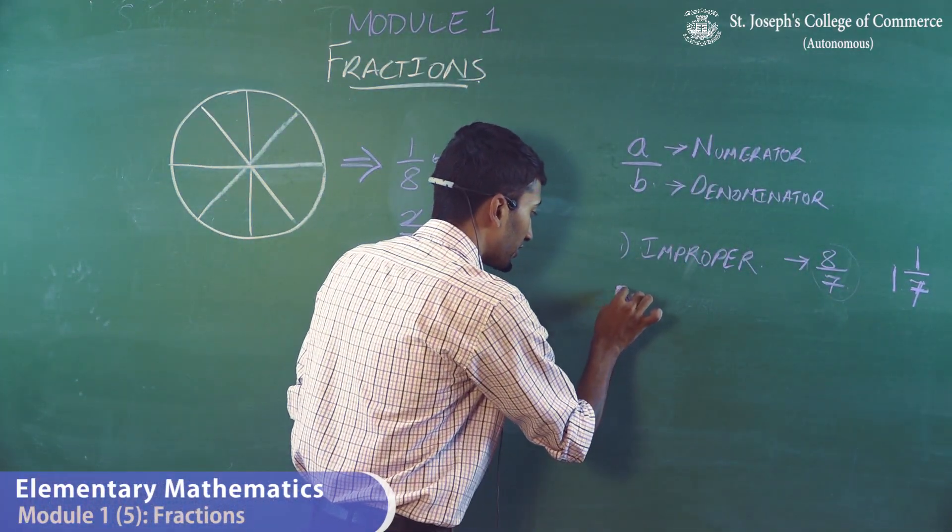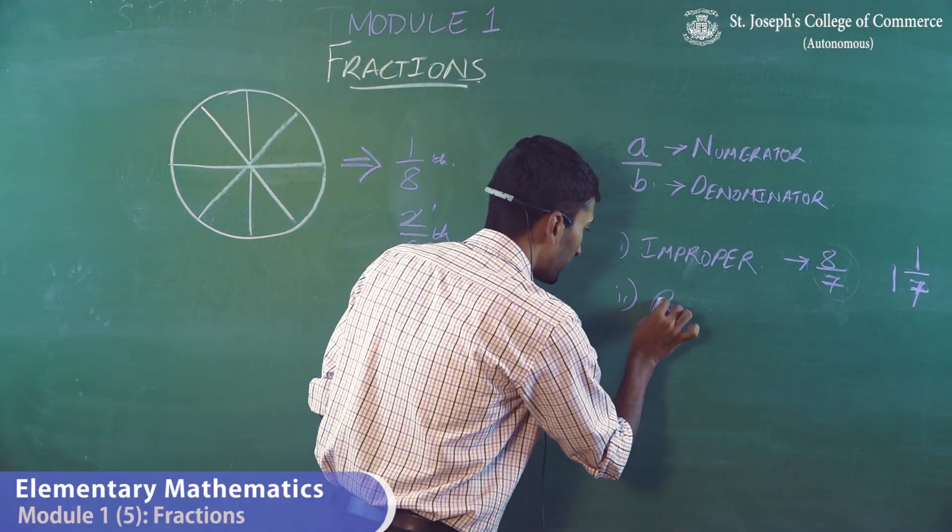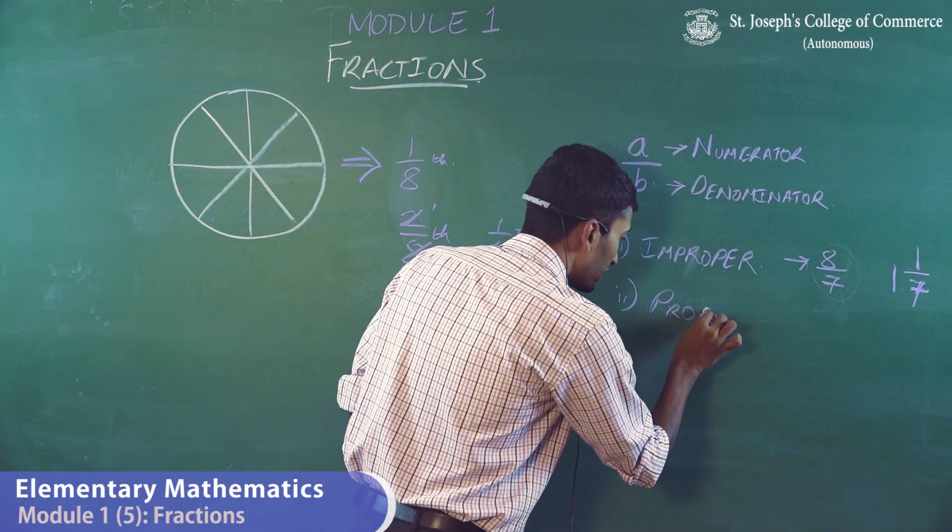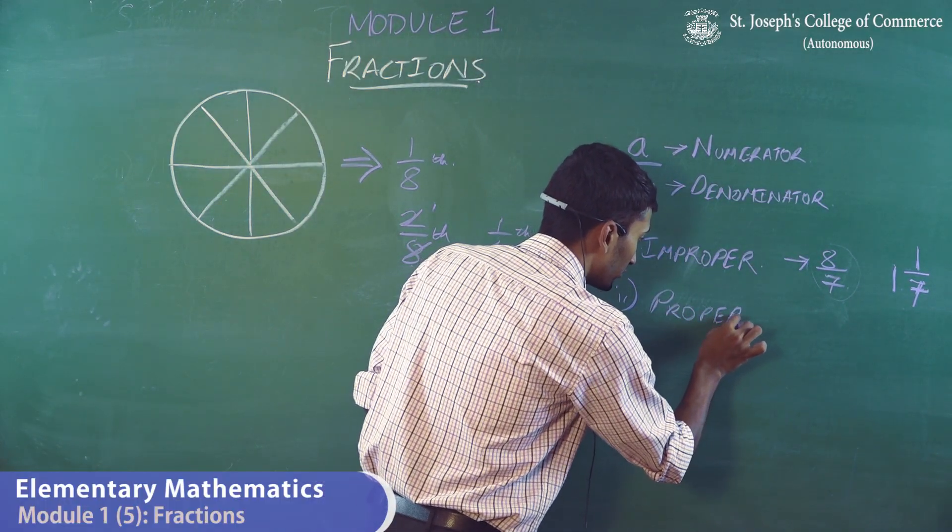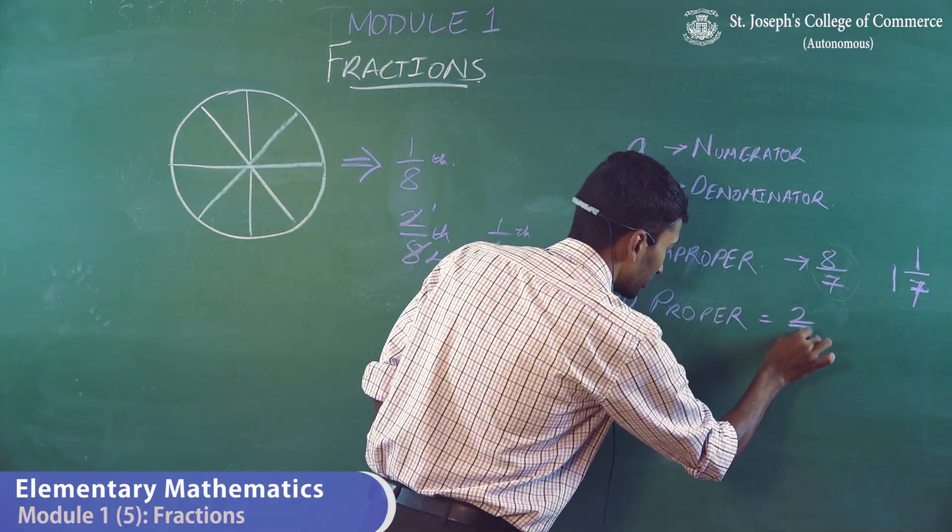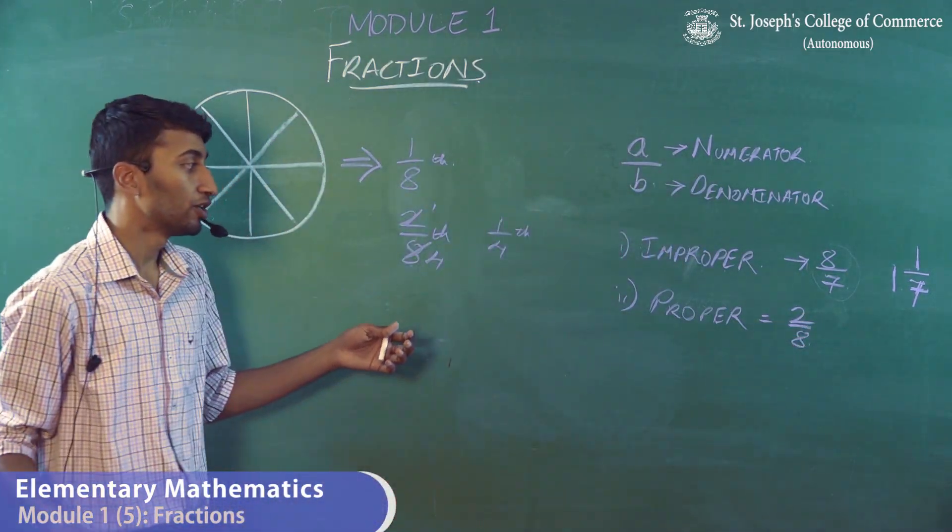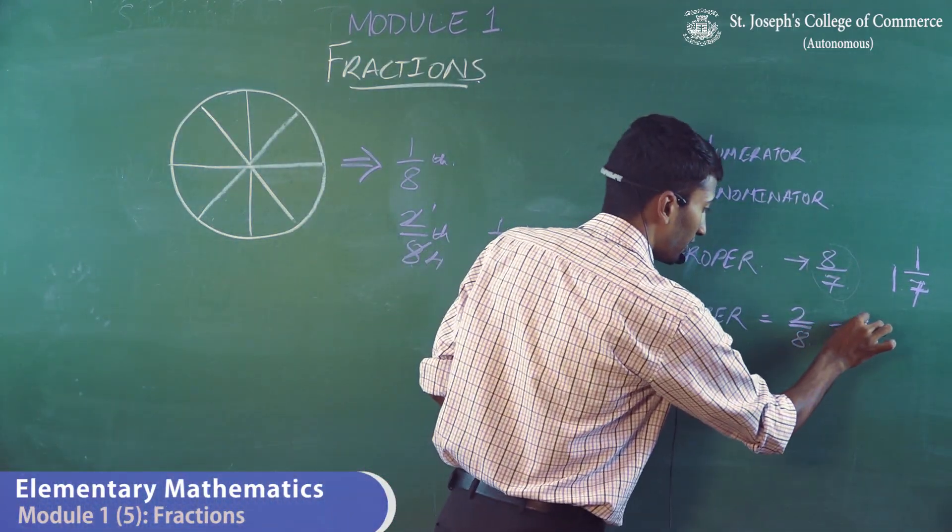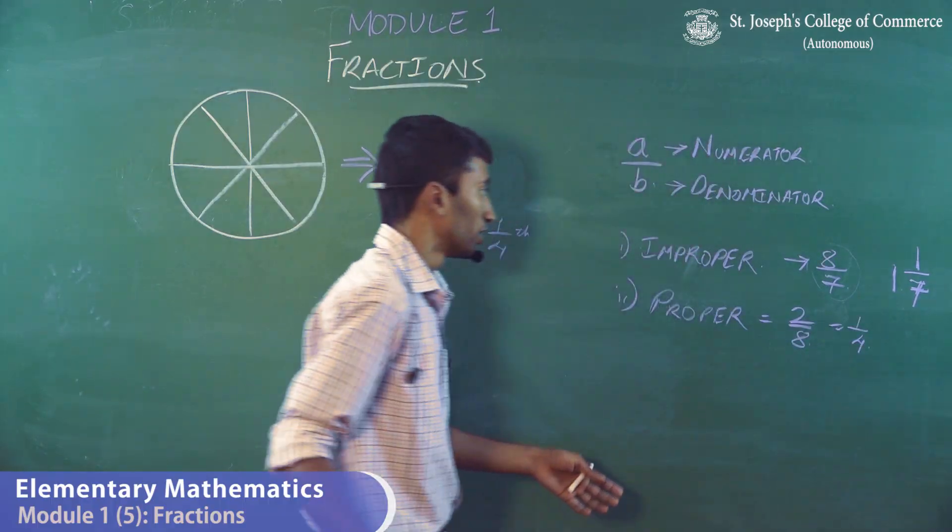Now, coming to the second part, which is proper fraction. Proper fraction is actually something like two by eight, as given in the example. So two by eight can be written as one by four. That is proper.